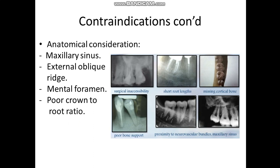Other local contraindications include surgical inaccessibility, in case of upper or lower posterior teeth. In case of short root lengths, because this is related to poor crown-to-root ratio — during the apicoectomy procedure we resect the apical plate, so this would jeopardize the stability of the tooth. Also in case of missing cortical plate, poor bone support due to periodontal disease, or proximity of the teeth to the maxillary sinus or to a neurovascular bundle, such as the inferior alveolar nerve or blood vessel.